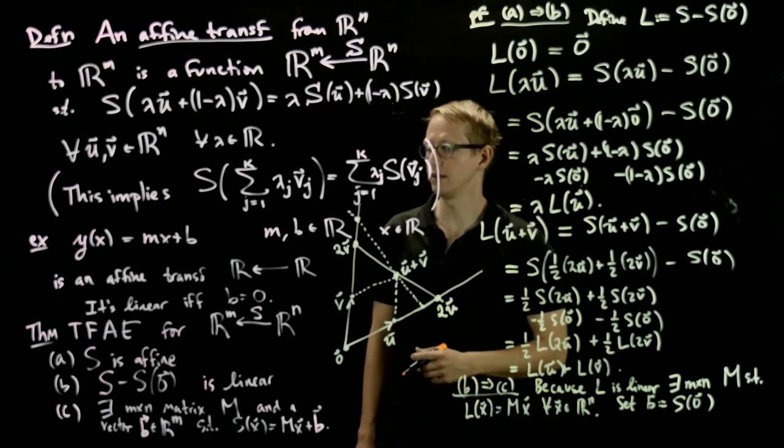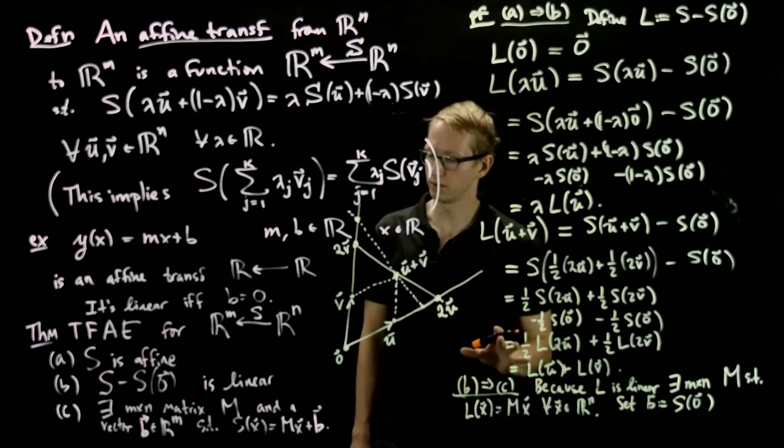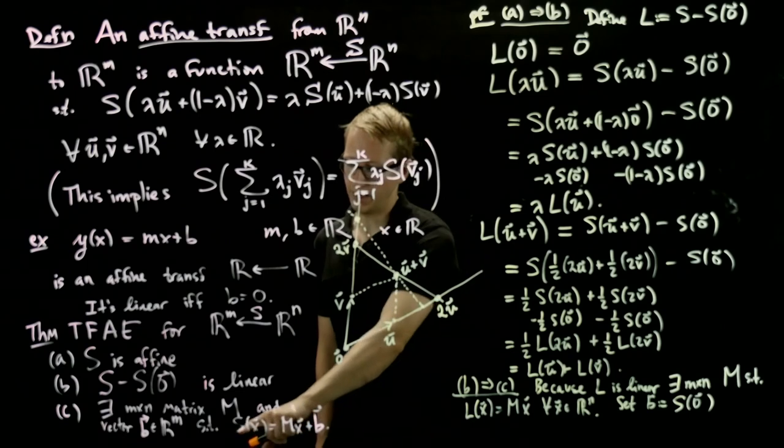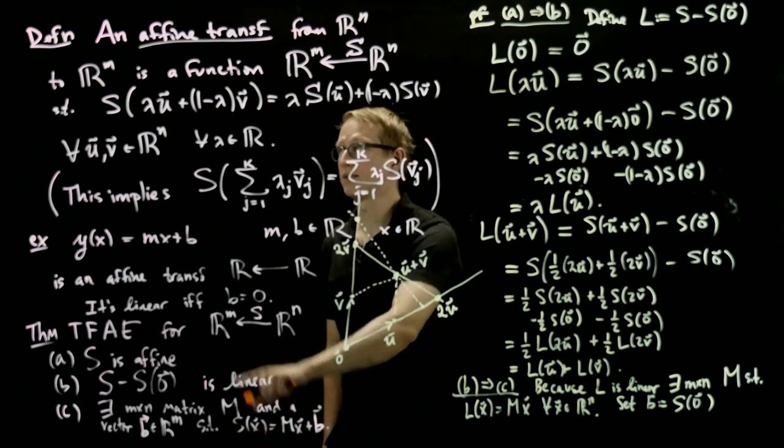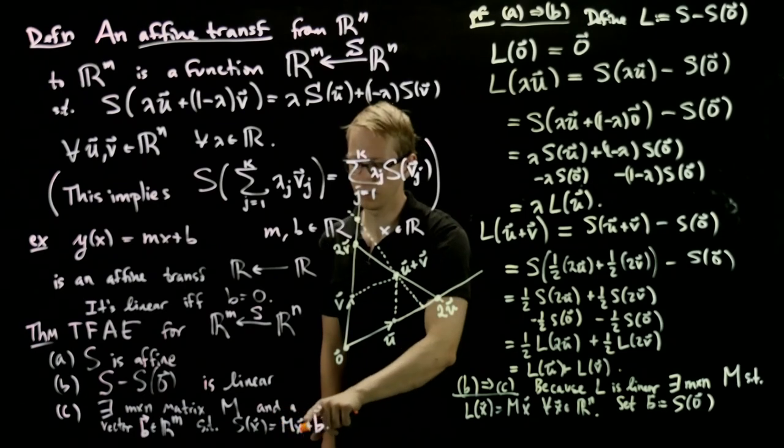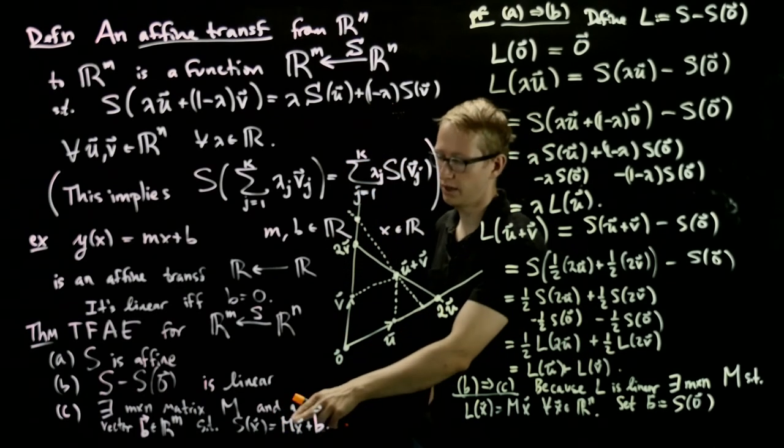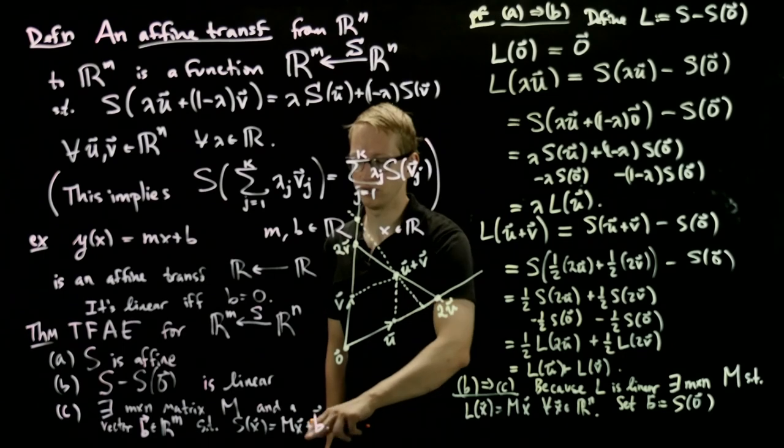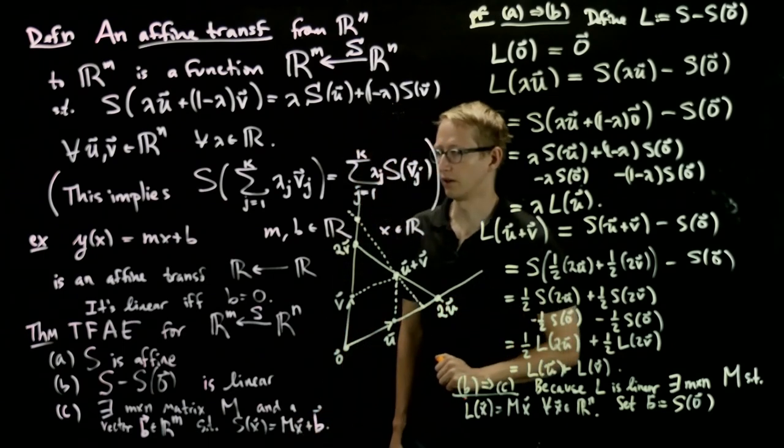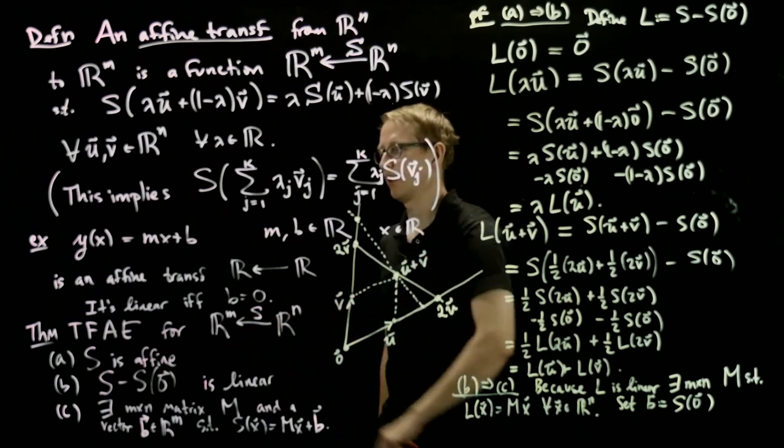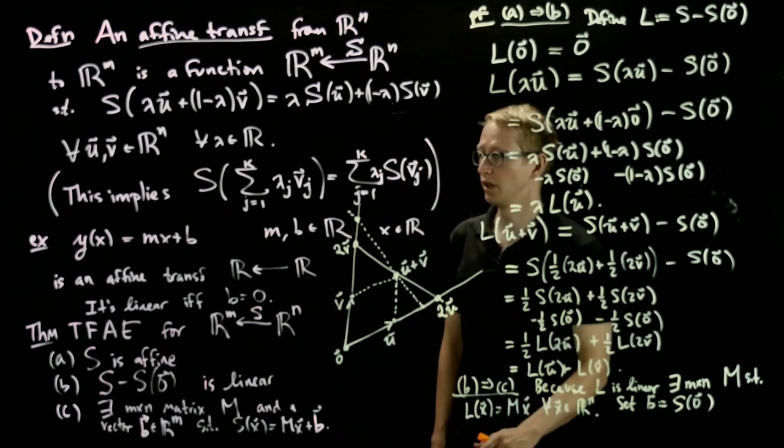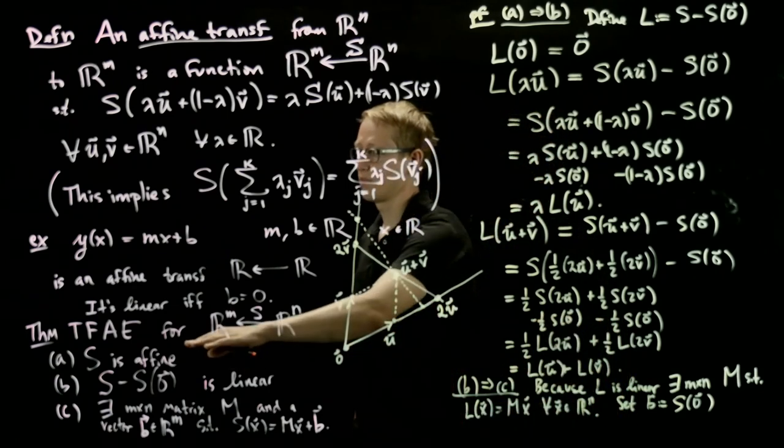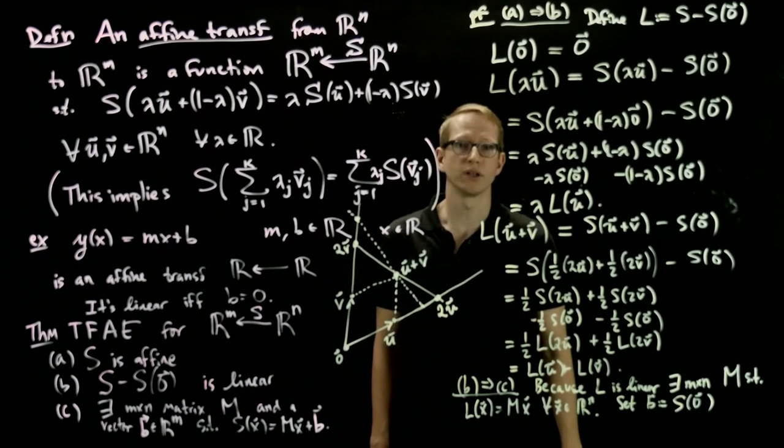So that's how b implies c. And then if we have c to imply a, this is very similar to these kinds of calculations of taking affine combinations. If we take s(λu + (1-λ)v), plug that in here, we know M acts in a linear way. This is a matrix. We apply matrix multiplication, distributivity, associativity of all these properties of addition of vectors and scalar multiplication of vectors in R^m. And we get that s is affine from this assumption. So these three conditions are equivalent for any function from R^n to R^m that characterize what it means for transformation to be affine.